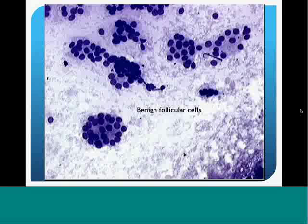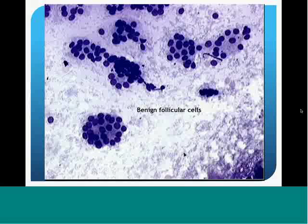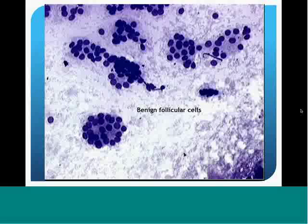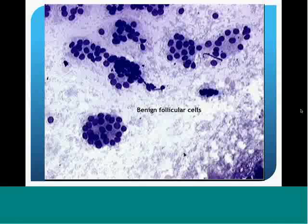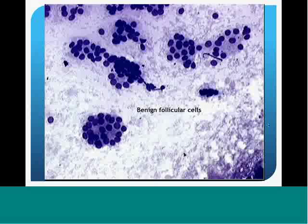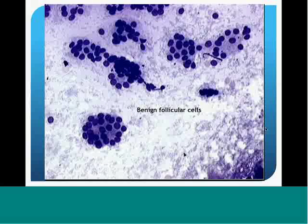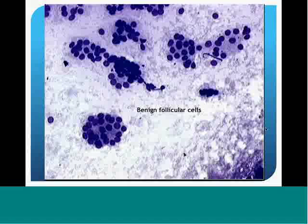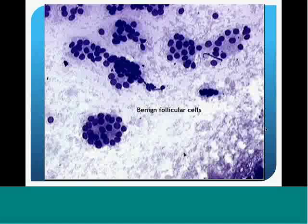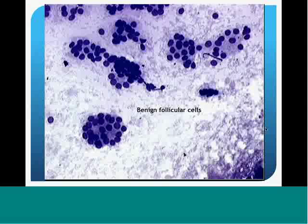This is the Difquik stain, and you can see that the follicular cells appear as dark purple cells. Some of these have follicular arrangements and are in small groups. They are evenly spaced out for the most part, with some single cells in the background, but mostly they are in small groups.